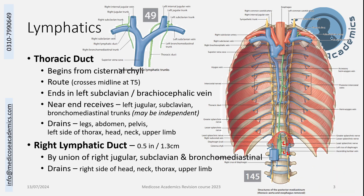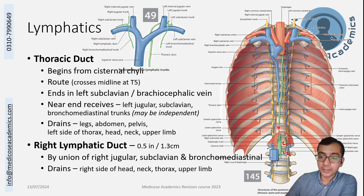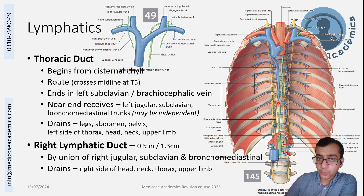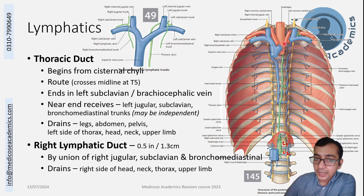The cisterna chyli is present right here. From its superior end, a duct arises known as the thoracic duct. It enters the thoracic cavity through the aortic opening, on the right side of the aorta, and moves up along the posterior wall near the vertebrae, slightly right of midline. It then crosses the midline to reach the left side, roughly at the level of the transpyloric plane.